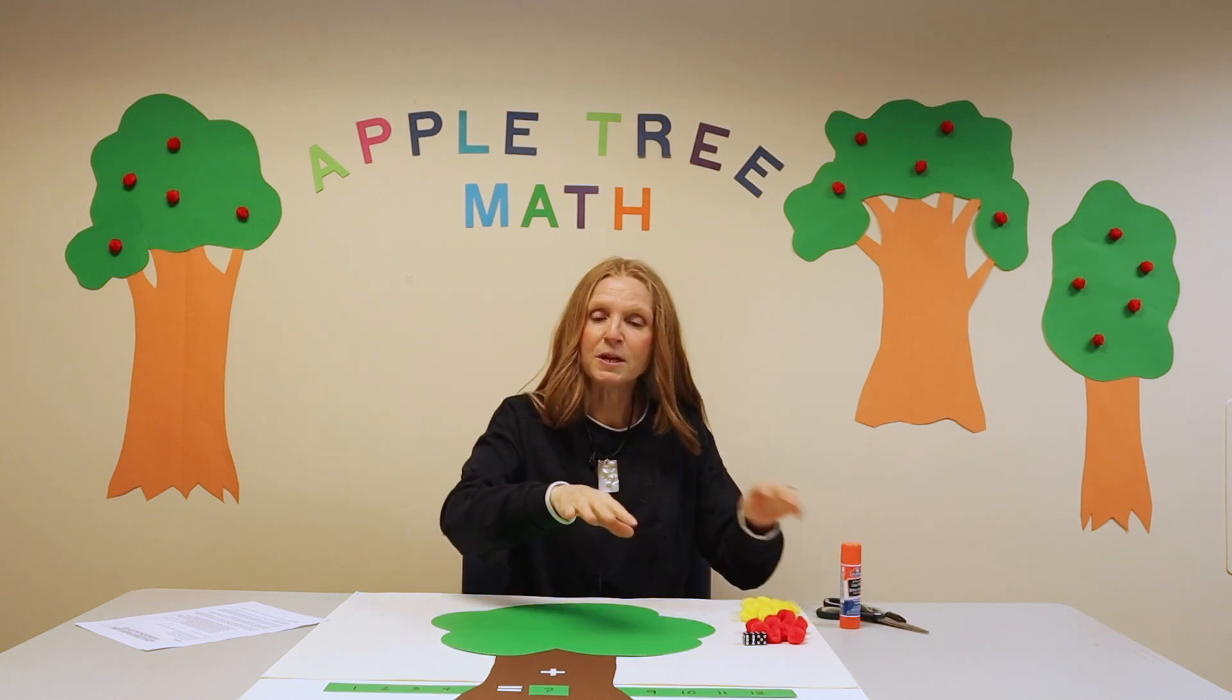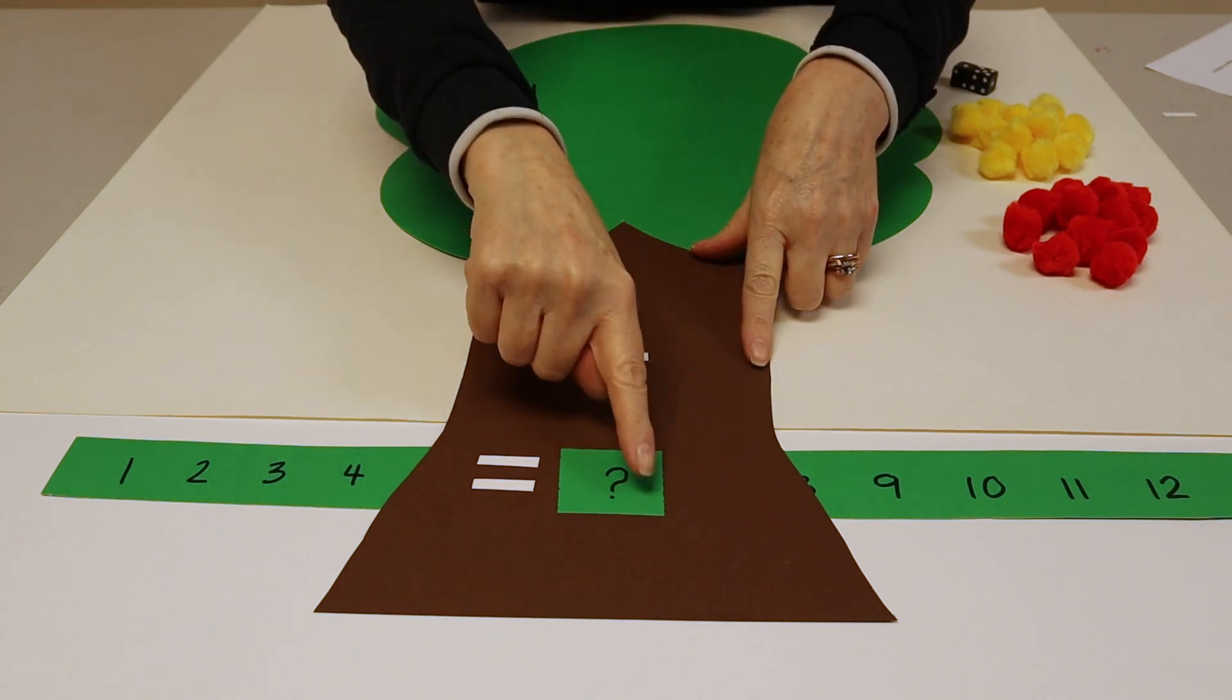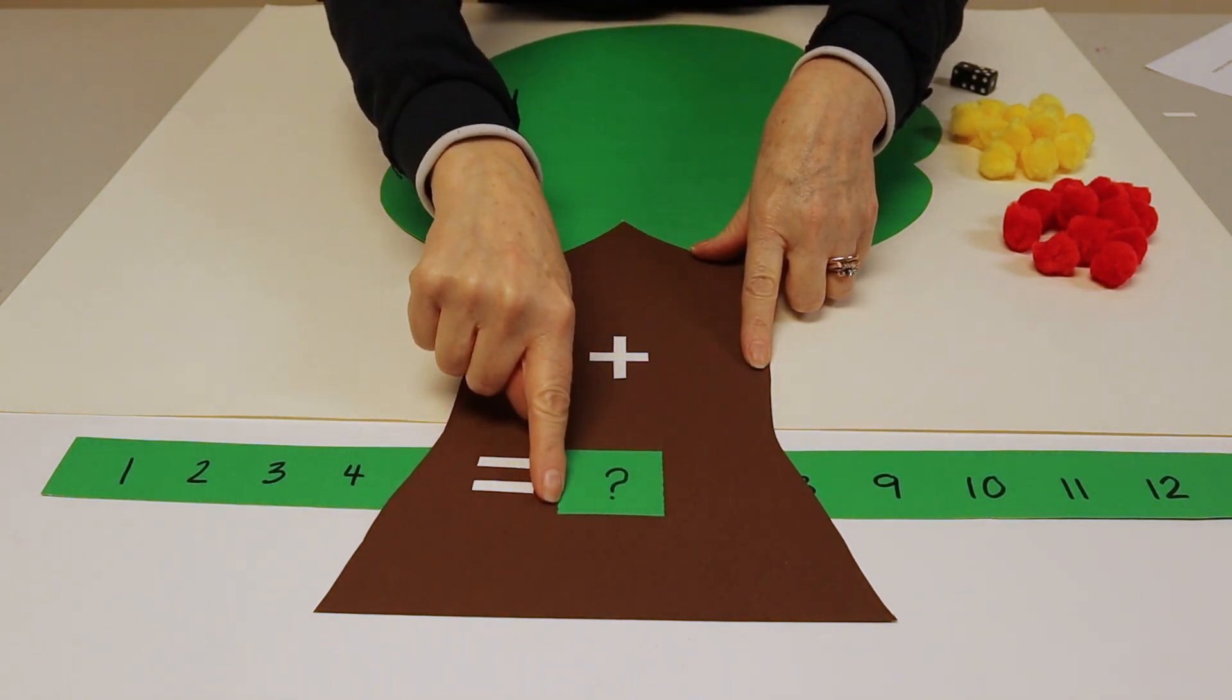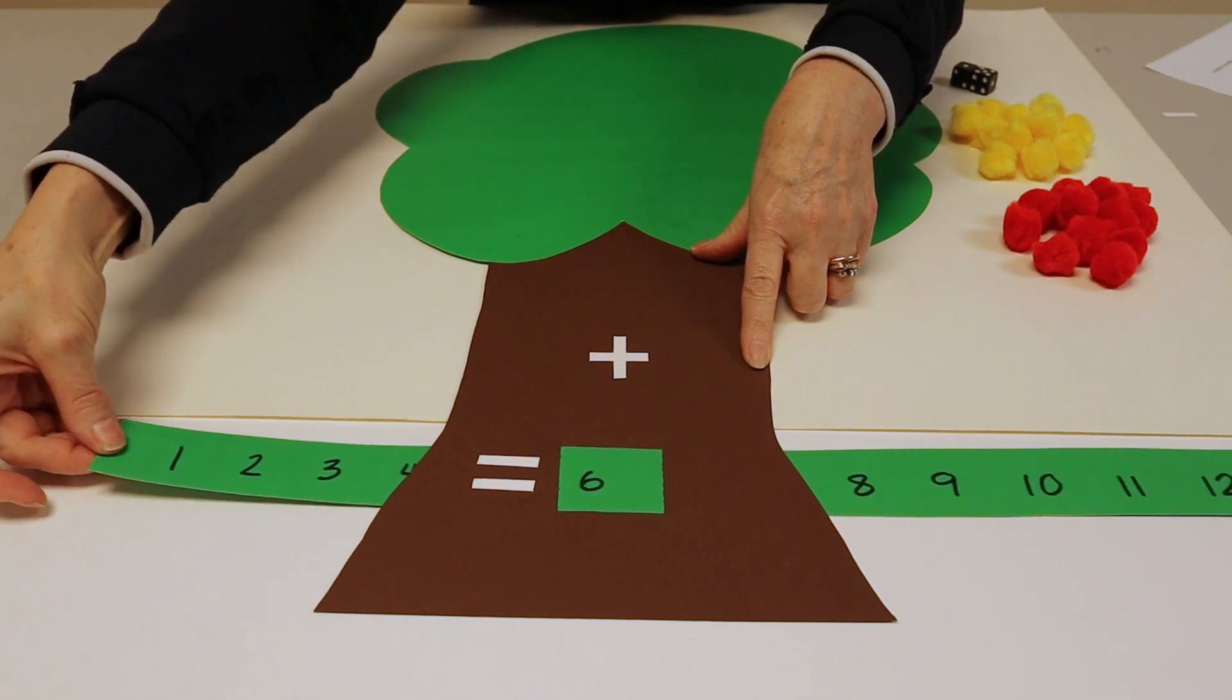Once you have your tree made you're ready to play the game. The last step is to cut two slits on either side so that your number strip can move through easily.